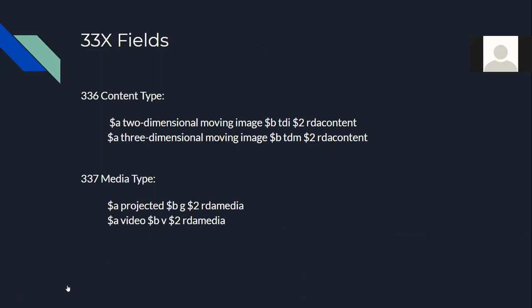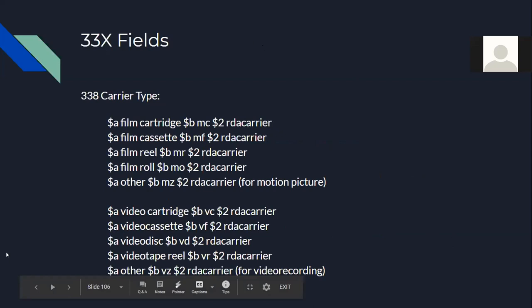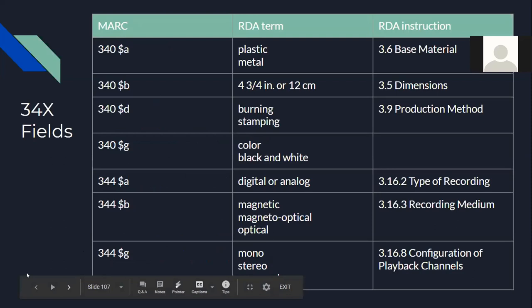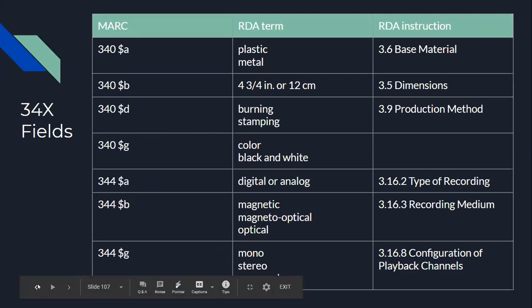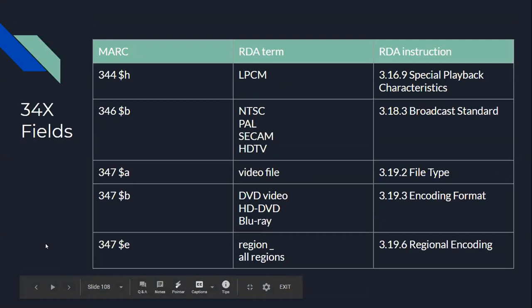For the 33X fields using RDA, content type (336) is going to be either three-dimensional or two-dimensional moving image. Media type (337) is going to be either projected or video. Carrier type (338) has options for motion pictures and a separate group for video recordings, both with an 'other' option but with different subfield B codes — MZ for motion picture and BZ for video recording. The 34X fields — 340, 344, 346, 347 — are meant to enhance the record and help prepare it for conversion from MARC. Use the RDA instruction references included when adding these fields.